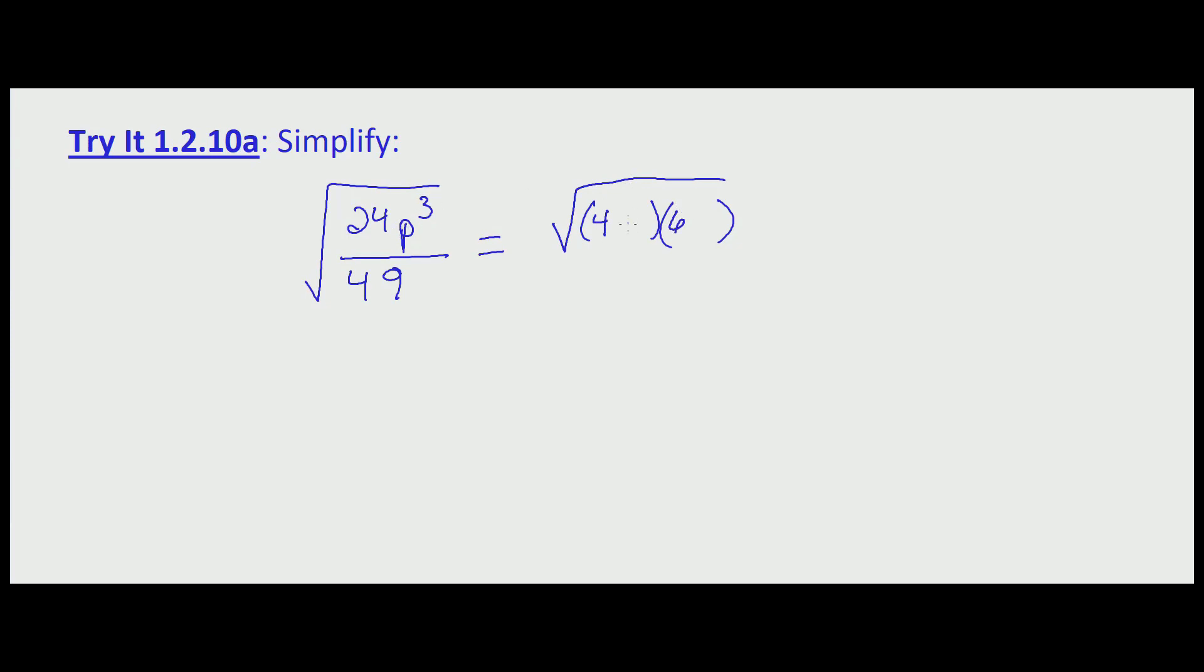And with p cubed, p squared is a factor that's a perfect square, leaving us with p.